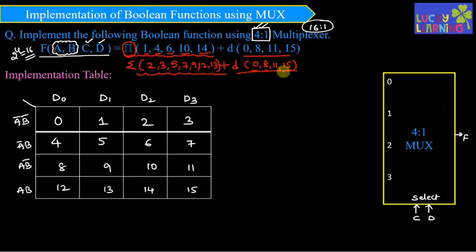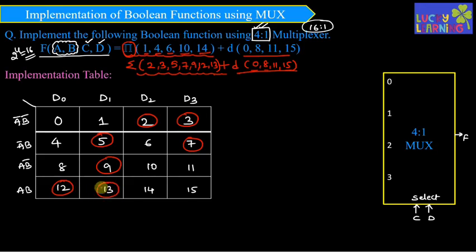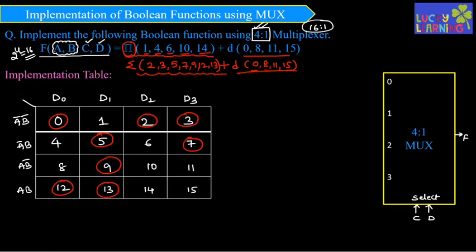Now circle all the min terms: 2, 3, 5, 7, 9, 12, 13. The don't cares — 0, 8, 11, and 15 — are also considered, since including don't cares in the Boolean function gives a more simplified result.